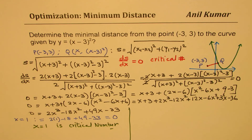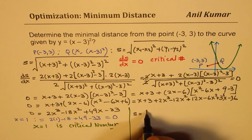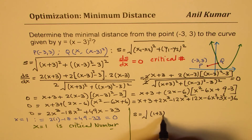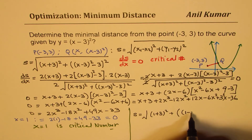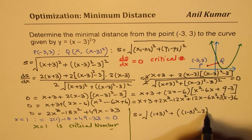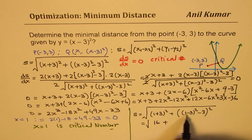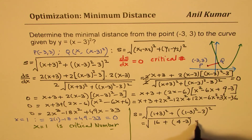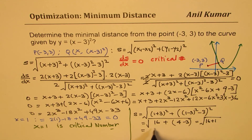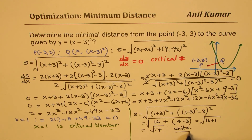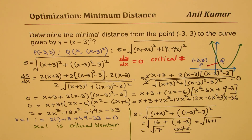For x equals 1, we substitute into the distance formula: s equals the square root of (1 plus 3) squared plus ((1 minus 3) squared minus 3) squared. That gives the square root of 16 plus (4 minus 3) squared, which equals the square root of 16 plus 1, which equals the square root of 17. So the minimum distance from the external point P to the curve is square root of 17 units.